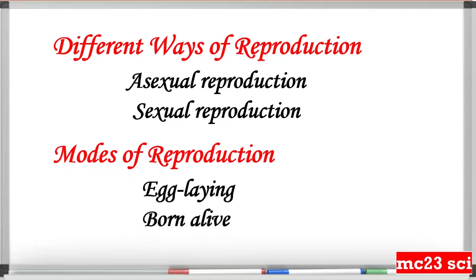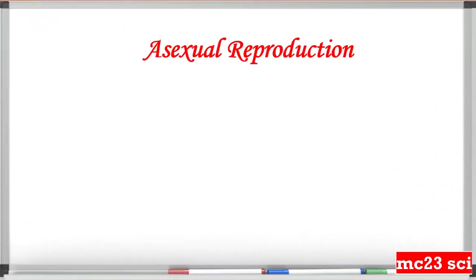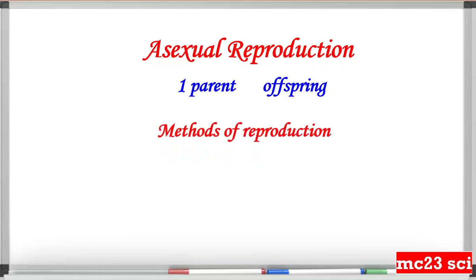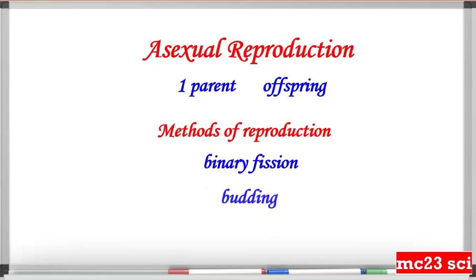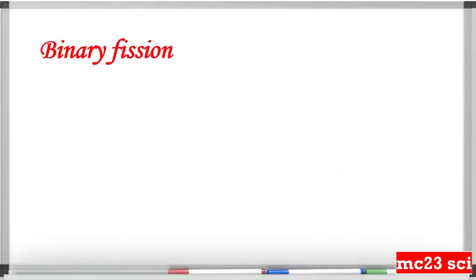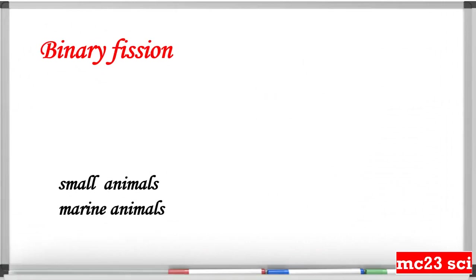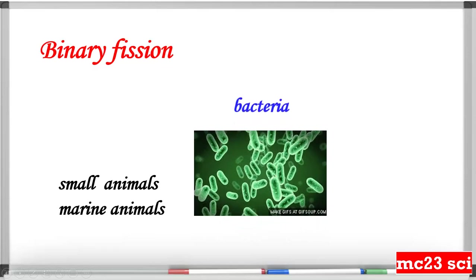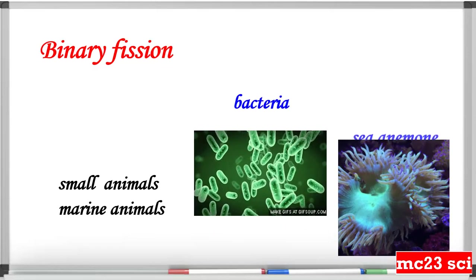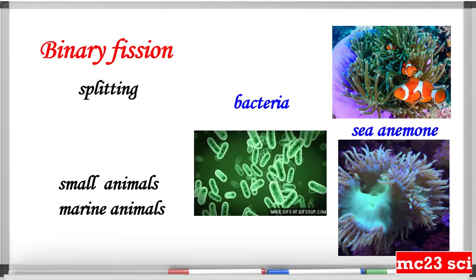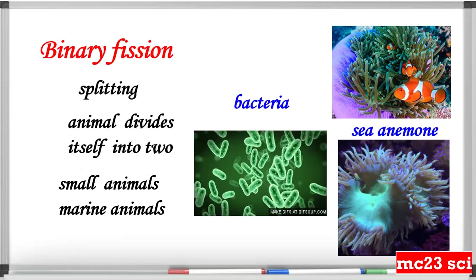Asexual reproduction needs only one parent to produce an offspring. The methods of asexual reproduction are binary fission and budding. Binary fission only happens in small animals and marine animals like bacteria and sea animals. This is also called splitting.